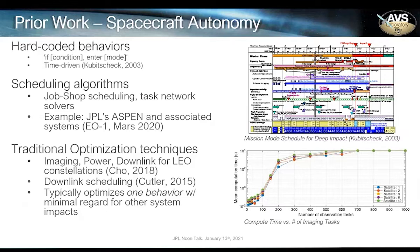At the lowest level are hard-coded behaviors — if-else trees, hard-coded timelines. On the other end of the spectrum are approaches that borrow heavily from the logistics domain and apply scheduling algorithms to spacecraft operations. A notable example is JPL's Aspen tool and all its associated derivatives, which have been hugely successful across a range of problems and have actually flown on board. EO1 had a volcanologist wake up to a Google News alert of a volcano eruption and sign into her account to see pictures from EO1 — they had autonomously imaged the volcano. In a middle domain are traditional optimization techniques that formulate specific aspects of the spacecraft operations problem, but tend to scale poorly as dimensionality increases.